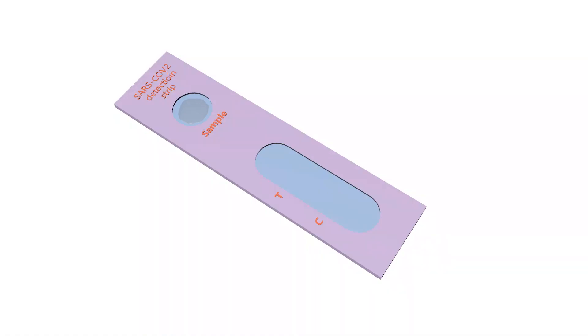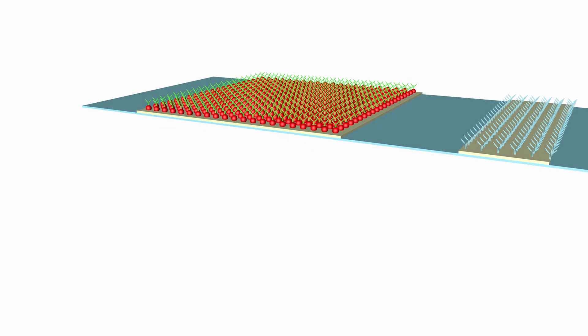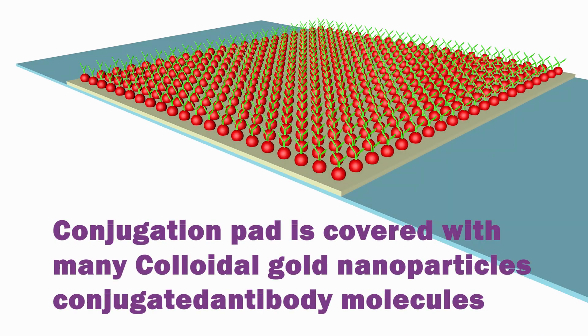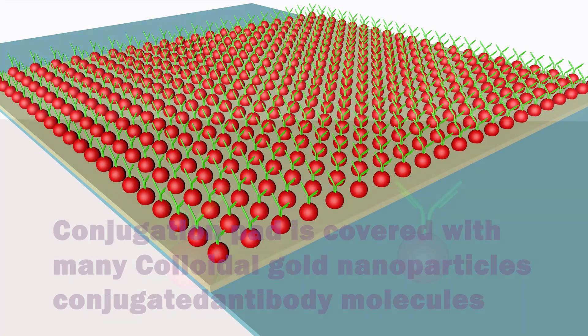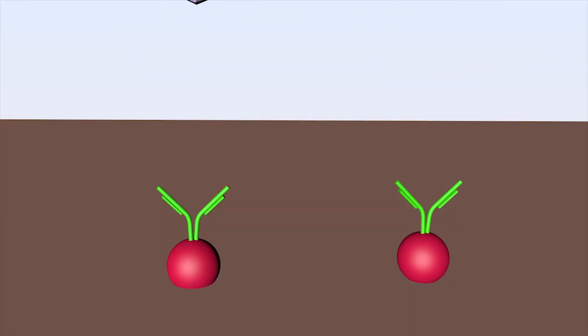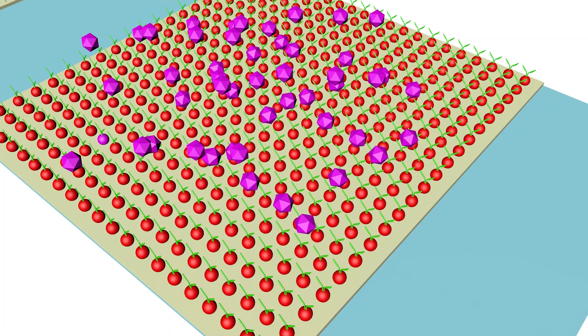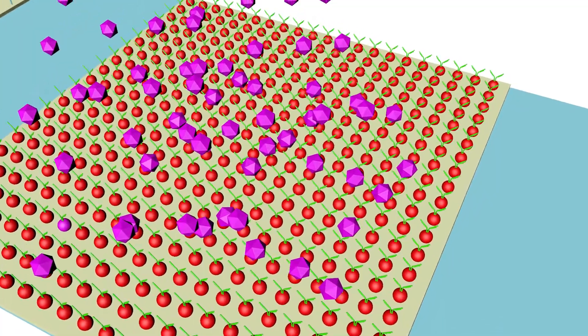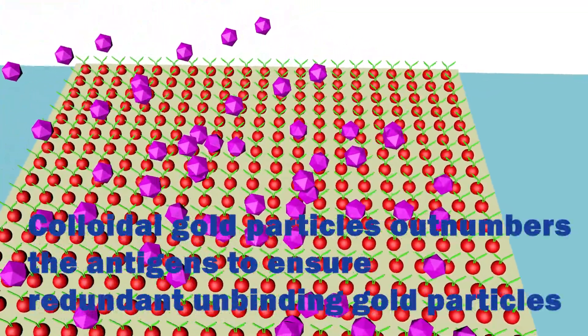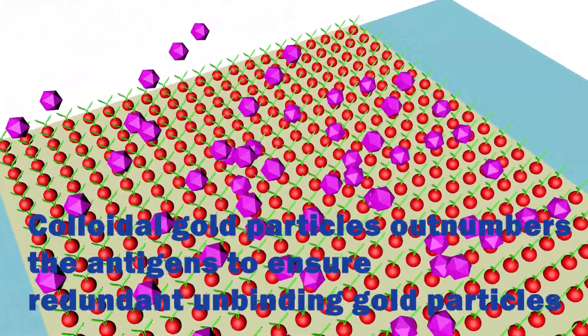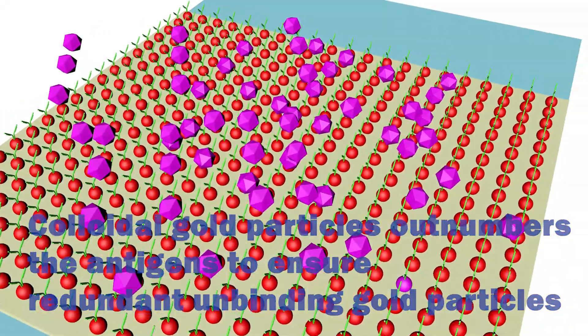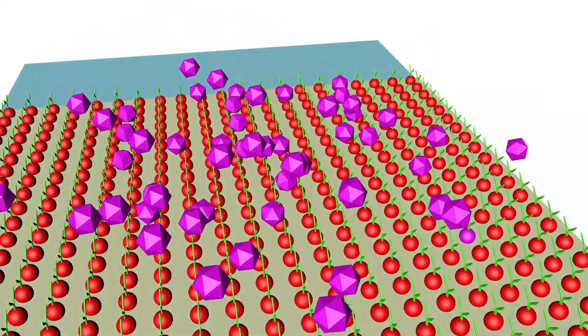The sample liquid arrives first at the conjugation pad. This pad is covered with a large number of colloidal gold particles conjugated with antibody molecules. These antibody molecules recognize and bind to the coronavirus antigens. It is important to note that the colloidal gold particles must outnumber the coronavirus antigens so that there are always redundant colloidal gold particles not bound to the antigens.